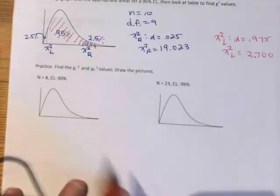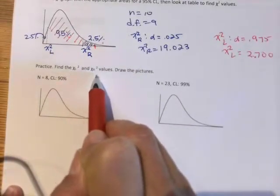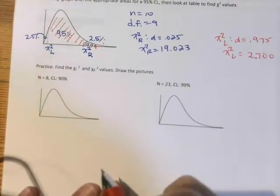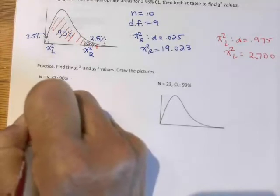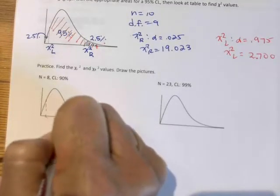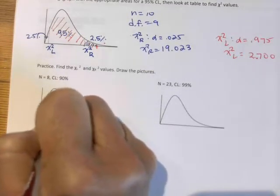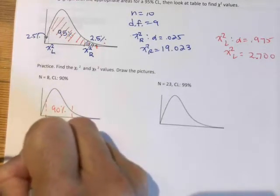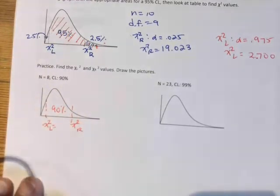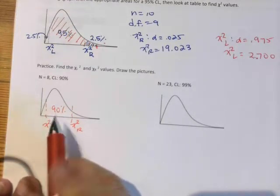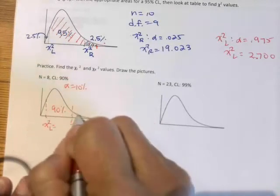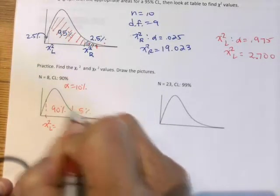So let's go ahead and practice. So let's find the chi-square left, chi-square right values, and then we'll draw the pictures. So n is 8, 90% confidence level, so I just go ahead and grab anywhere. So 90% in the middle. Chi-square, I typically label these on the bottom just so that I'm sure, chi-square left and chi-square right. So if it's 90% confident, that means that I've got 10% to share, so 5% on each side.